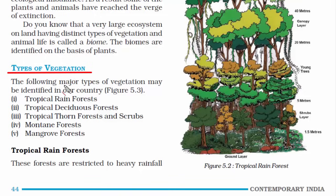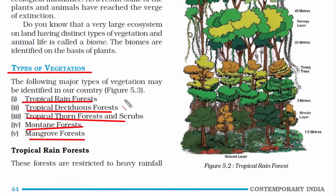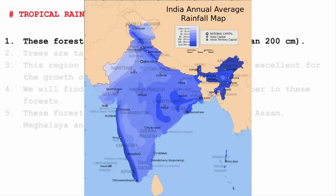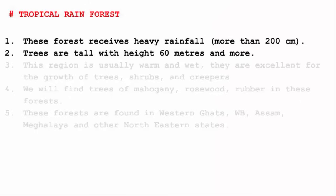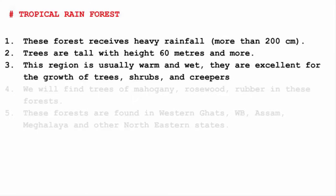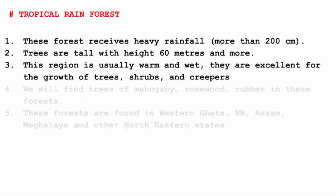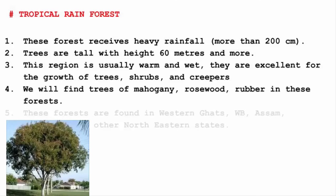There are five major types of vegetation: tropical rainforest, tropical deciduous forest, tropical thorn forest and scrubs, montane forest, and mangrove forest. Tropical rainforests are found where there is heavy rainfall — more than 200 cm. The trees are very tall, with a height of 60 meters and more. This region is usually warm and wet, excellent for the growth of trees, shrubs, and creepers. The word 'tropical' implies ample sunshine and warmth, and 'rainforest' means it is wet.